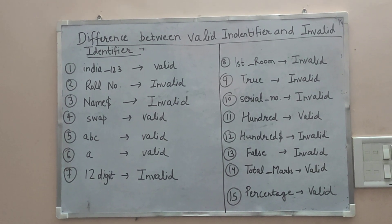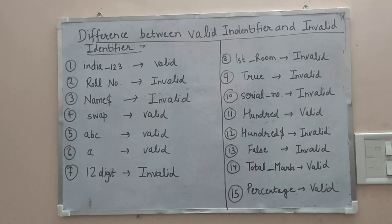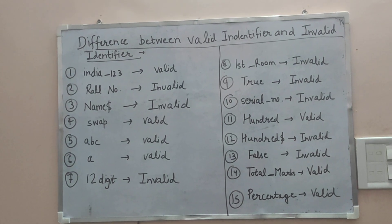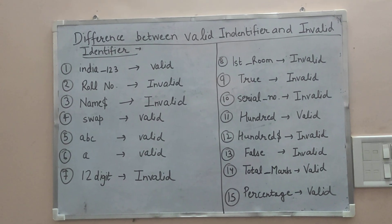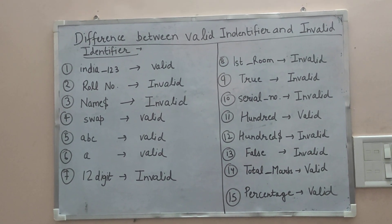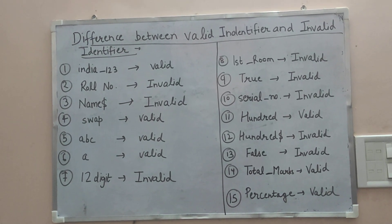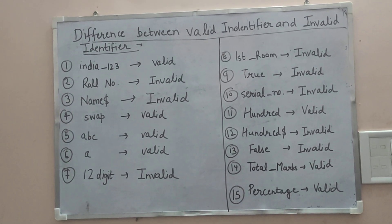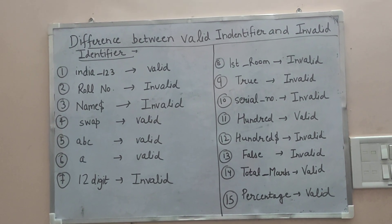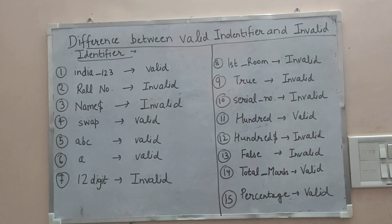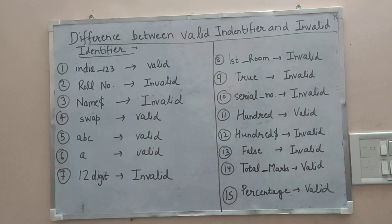Number one is `india_123`. This one is valid. Why? Because we know that underscore is the only special character which we can use in an identifier. Other special characters are not allowed except underscore, so this one is valid.